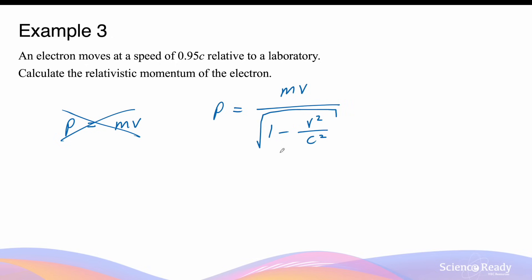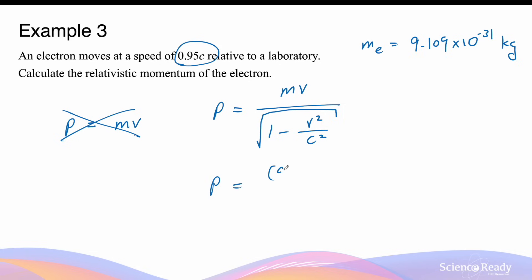This expression has the same denominator term as in the previous two questions on time dilation and length contraction. We are already given the velocity of the electron, v, used in both numerator and denominator. The mass of the electron is also important and is provided in the physics data sheet — approximately 9.109 times 10 to the minus 31 kilograms.